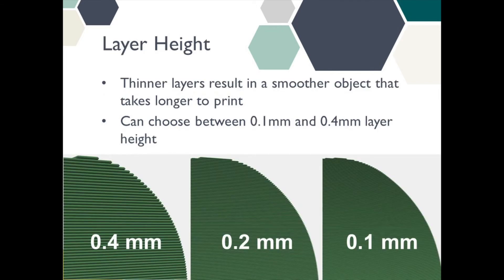The final setting we're covering, and the most noticeable one when it comes to how your project looks, is the layer height. The surface quality of your 3D print is determined by the height of each layer. The thinner the layer height is, the more layers it will take to build your object, and therefore the smoother it will be. However, thinner layers also mean that it takes more of them to make your project, so it will take longer and therefore cost more. All three of these settings will affect the printing time of your project, but where you will see the biggest difference in printing time is with the layer height.